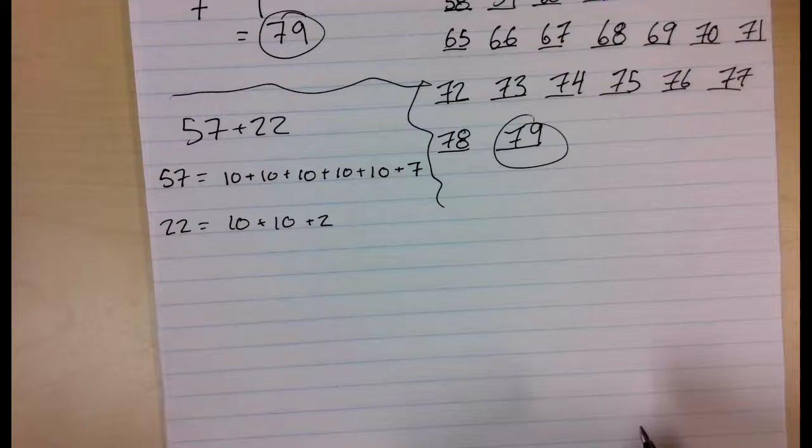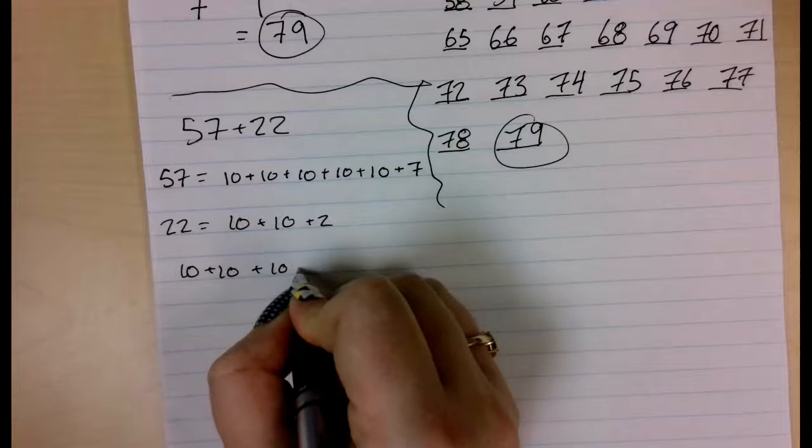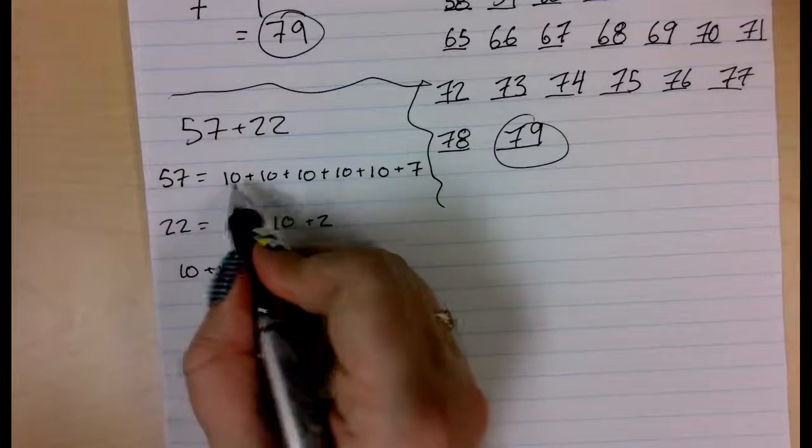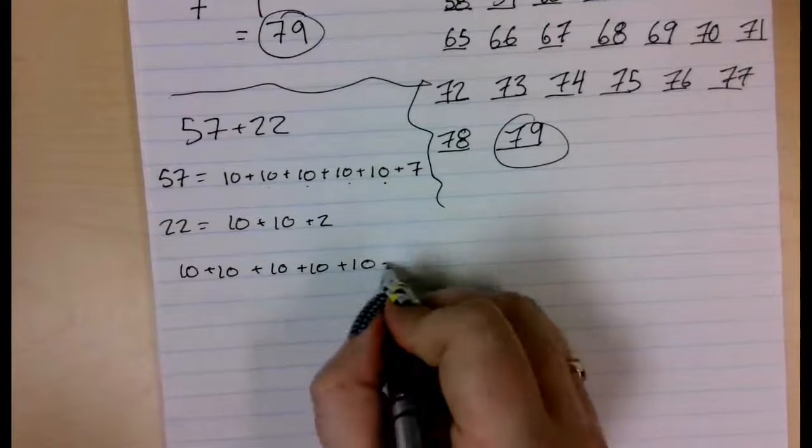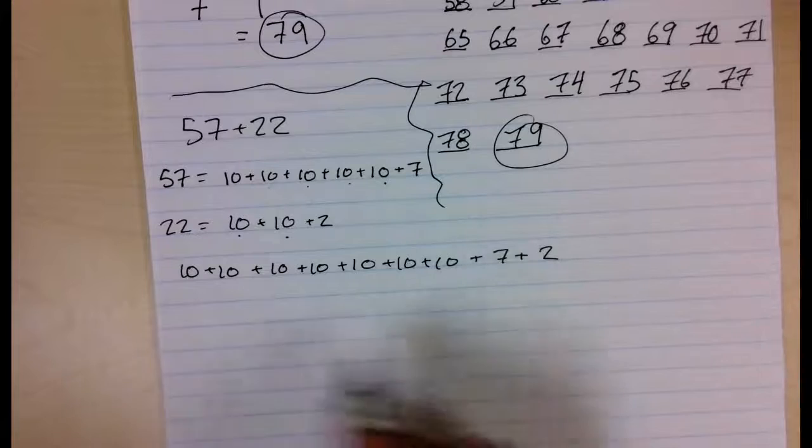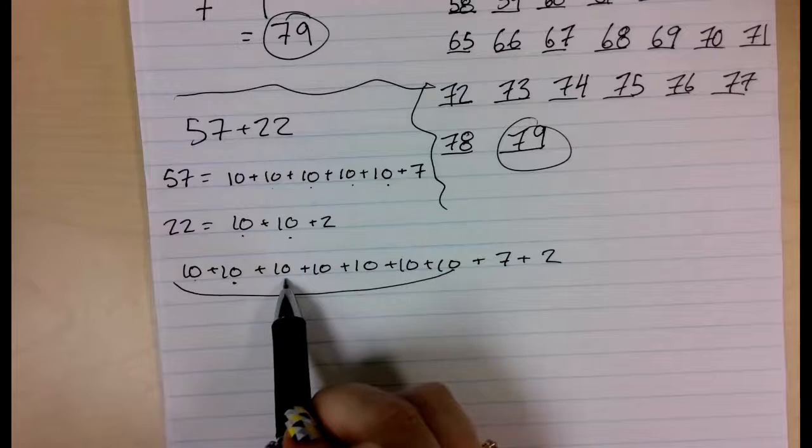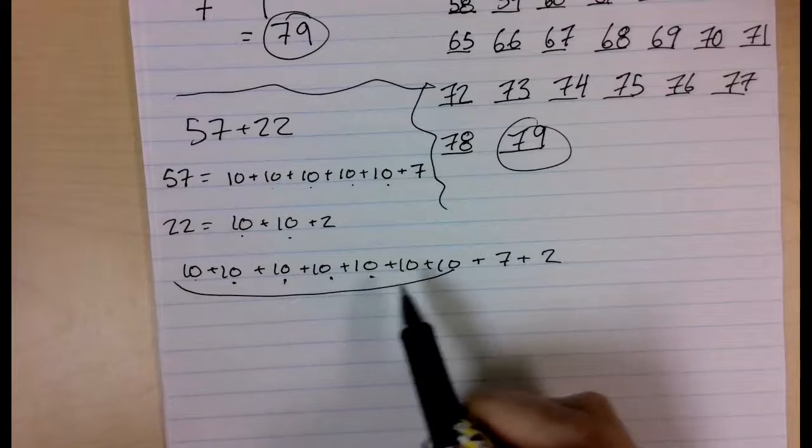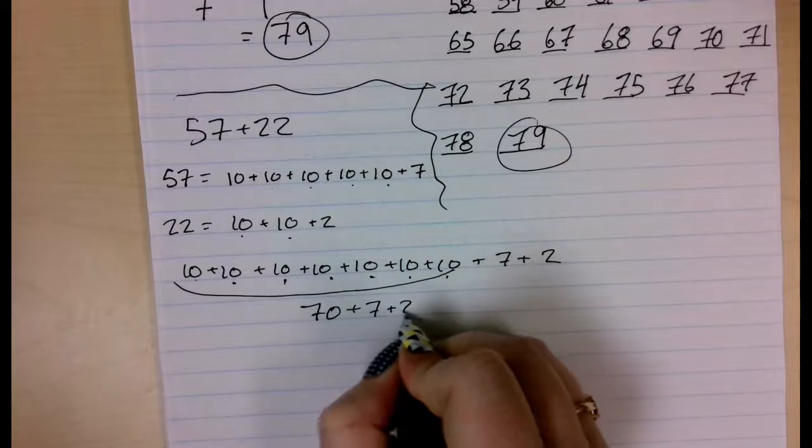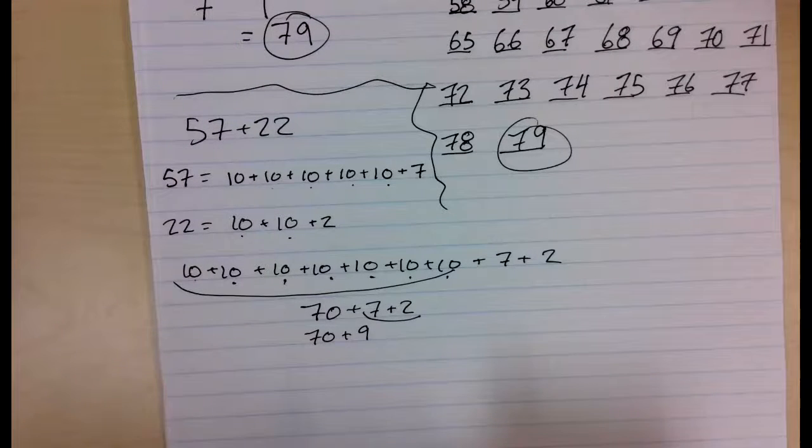And then, I am going to collect all my 10s. 1, 2, 3, 4, 5, and then 2 more. And then, on my 7 and my 2. Focus on my 10s. 10, 20, 30, 40, 50, 60, 70, using our skip counting. And then, I could do 70 plus 9, because 2 and 7 is 9. And that is 79.